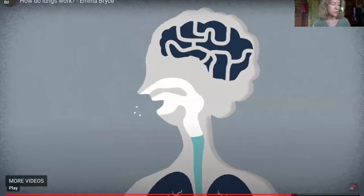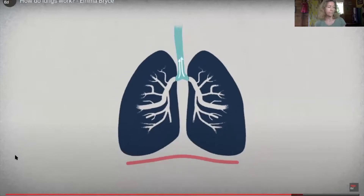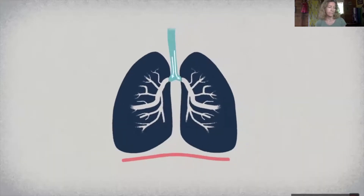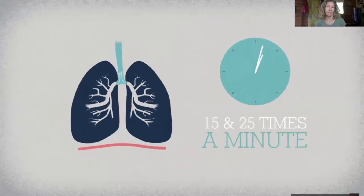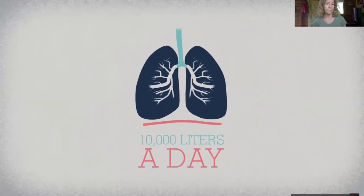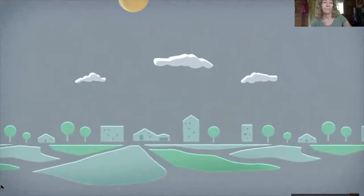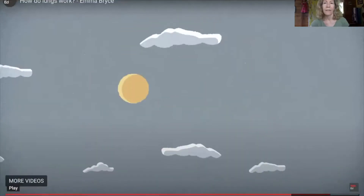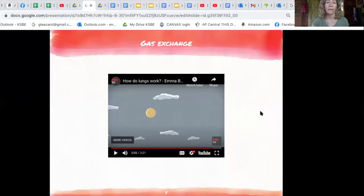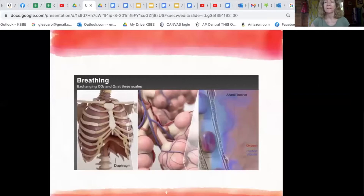Lungs inhale and exhale between 15 and 25 times a minute, amounting to an incredible 10,000 liters of air each day. Your lungs and autonomic nervous system have got it covered. You can rewind as needed to complete those questions for the video.